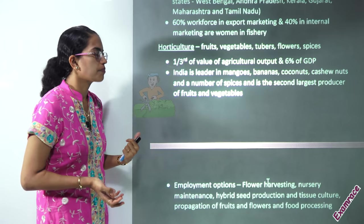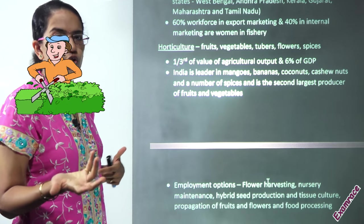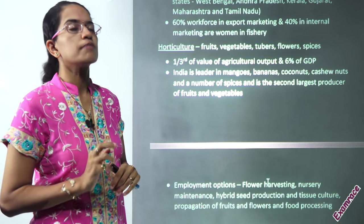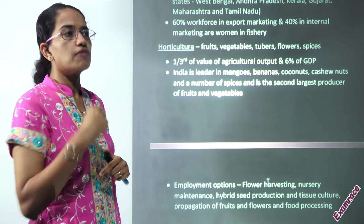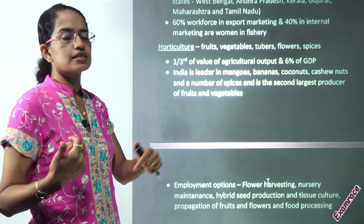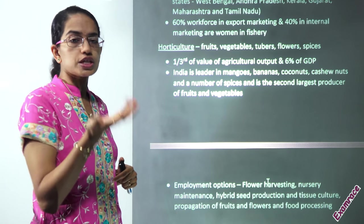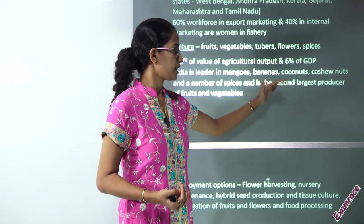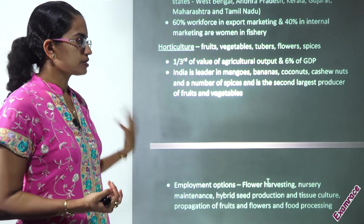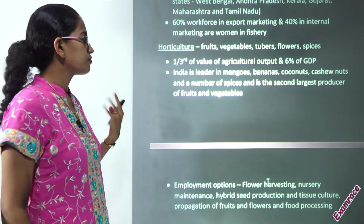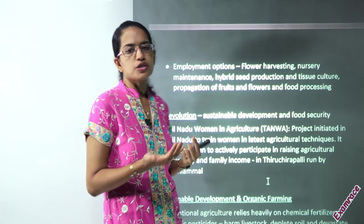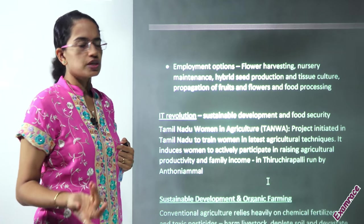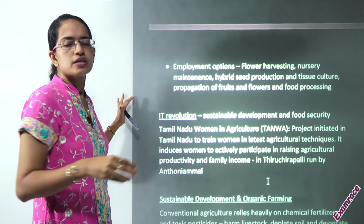Similarly, horticulture needs to be developed. Some countries have worked really well with horticulture — Israel is one example. Despite poor landforms and poor physical infrastructure there, a good idea of drip irrigation has resulted in a good boost in horticulture production. India can be a leader in horticulture because India is already a leader in mangoes, bananas, coconuts, cashew nuts, and some spices. India is the second largest producer in terms of fruits and vegetables. Horticulture can bring in employment opportunities for harvesting flowers, hybrid seed production, tissue culture technology, and biotechnology in the horticulture field.